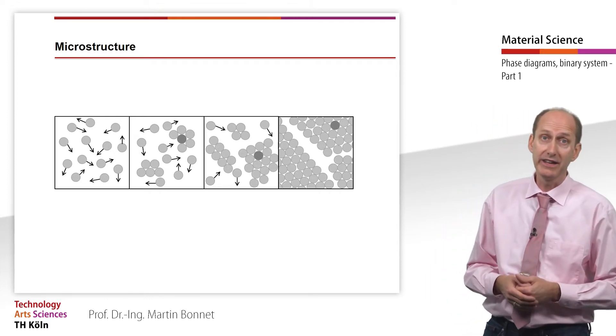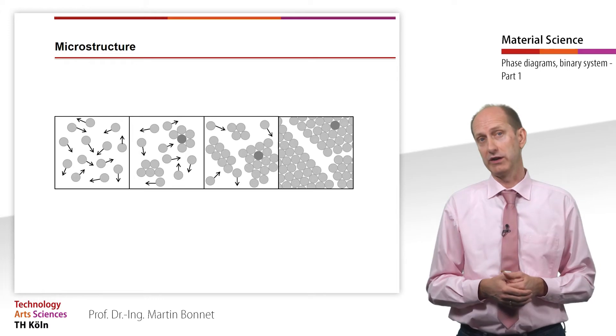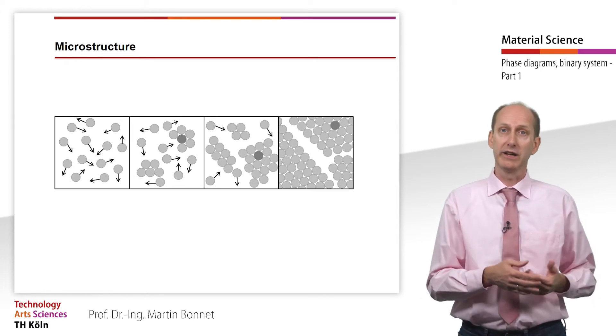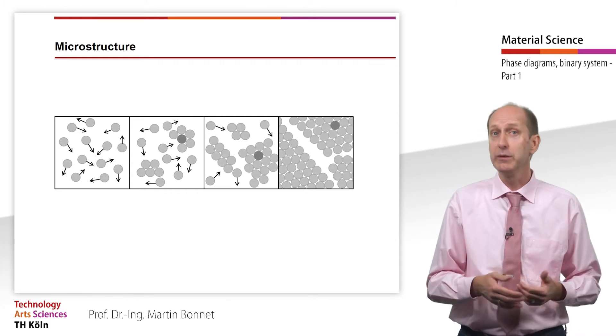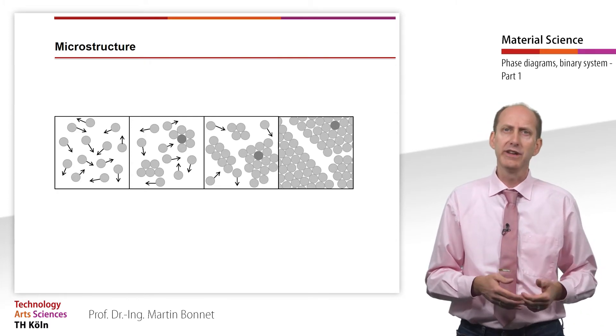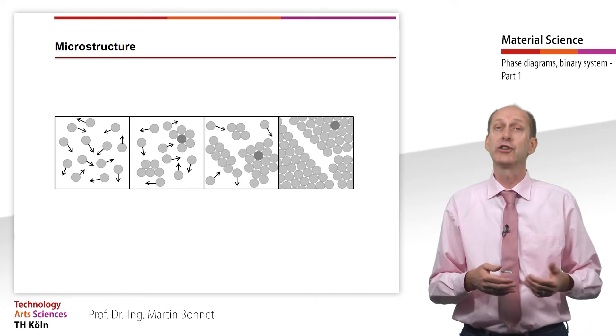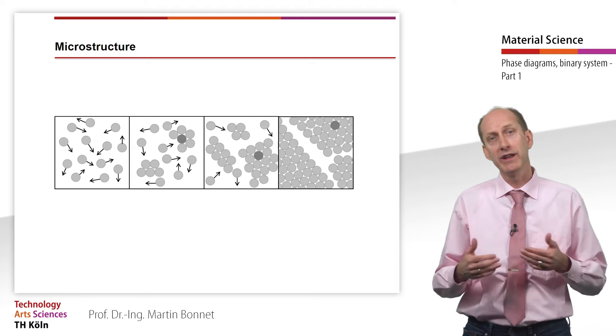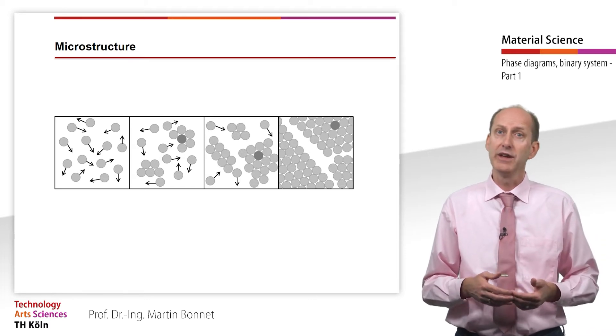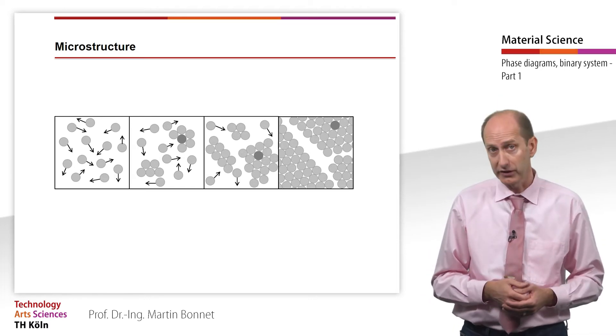Crystal nuclei are categorized into internal and foreign nuclei. Internal nuclei are tiny crystal residues that are not fully melted. They are found in all melts that are not overheated. Foreign nuclei are slag particles or certain additives to the melt that induce a special type of crystallization.